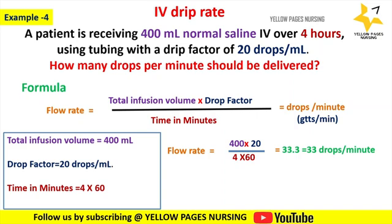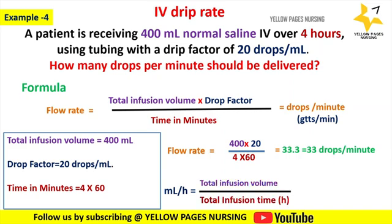Remember that drops are always rounded to the nearest whole number. For the same example, if we require ml per hour, the formula is total infusion volume divided by total infusion time — that is 400 divided by 4, which gives 100 ml per hour.